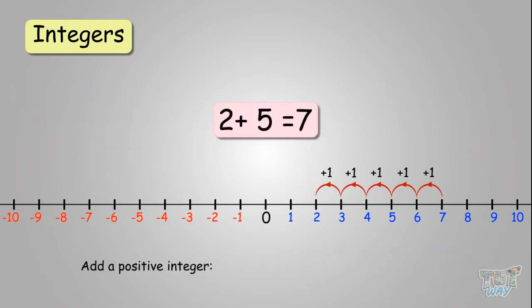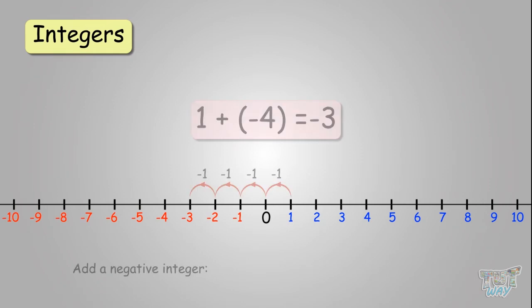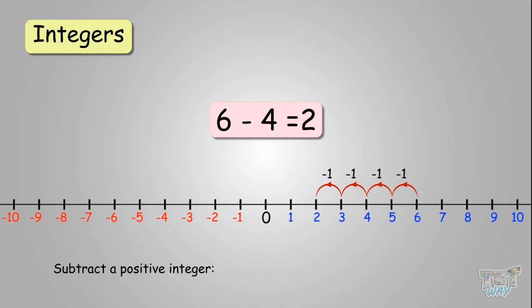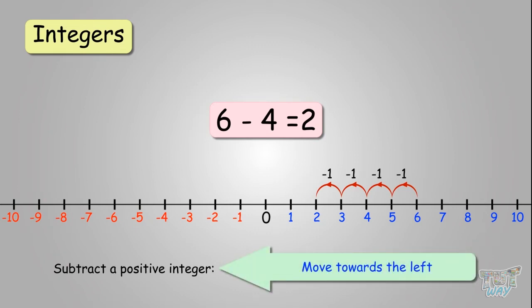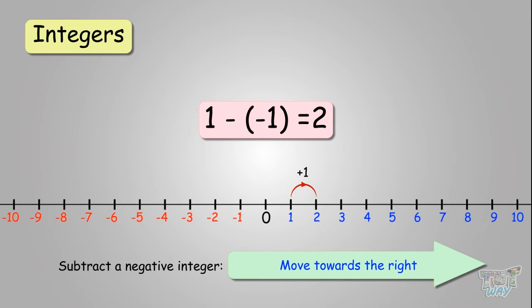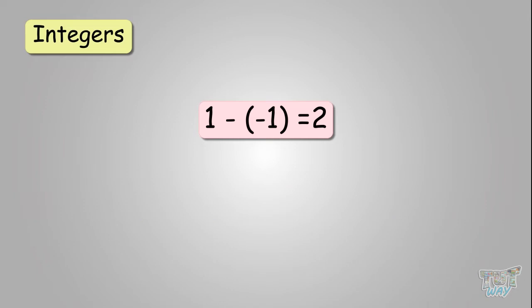To summarize: add two positive integers, move towards the right. A positive and a negative, move towards the left. Subtract two positive integers, move towards the left. And subtract a negative integer, move towards the right. We did a lot of sums on adding and subtracting integers on the number line. Now we won't be using the number line. Let's learn using an example.